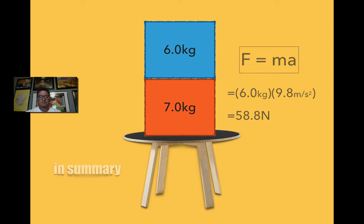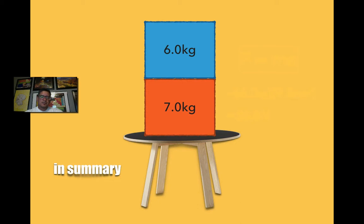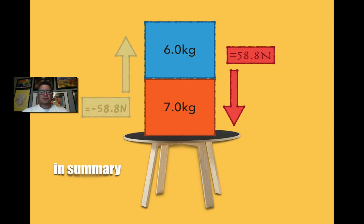So in summary, since I know that there's a downward force of 58.8 Newtons, that's my magnitude and my direction is down. Then I know that there's an equal and opposite force of 58.8 Newtons upward. So the blue box is